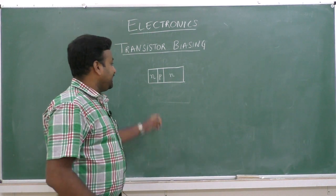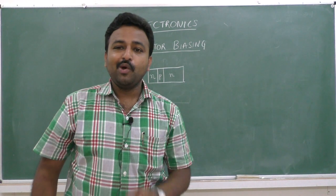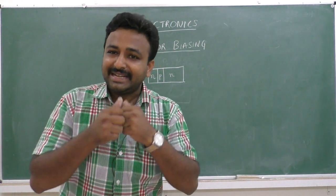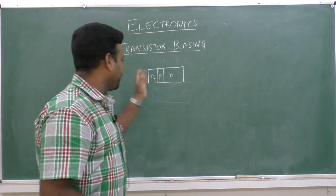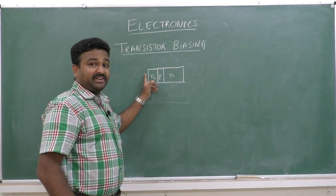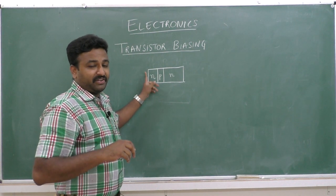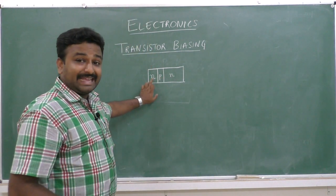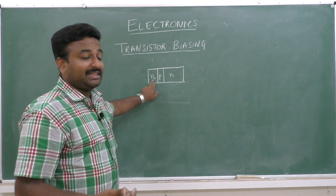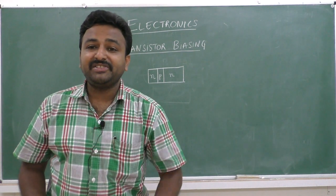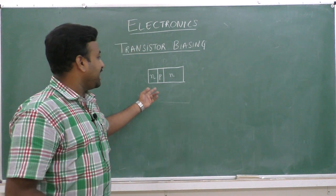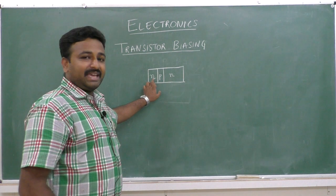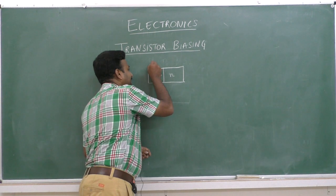This is an interesting concept. The moderate-sized region is heavily doped, so the number of majority charge carriers is very high. This region is capable of emitting majority charge carriers to the remaining regions of the crystal. Since this region emits majority charge carriers, it got the name emitter.